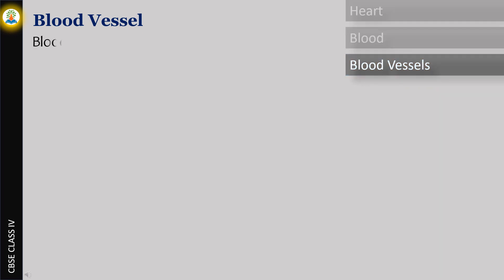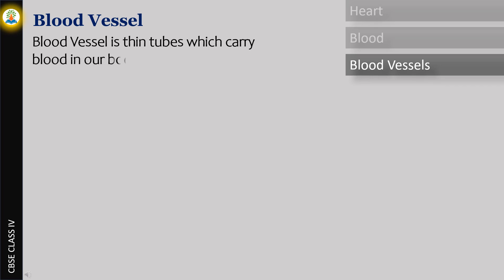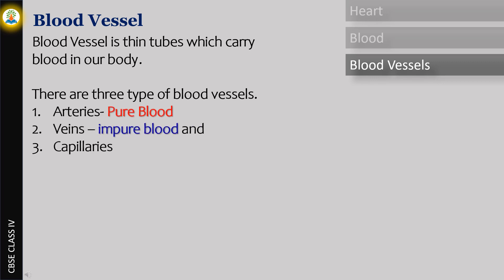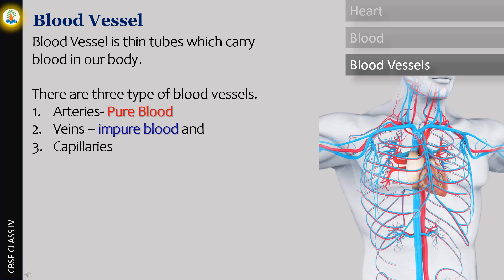A blood vessel is a thin tube which carries blood in our body. There are three types of blood vessels: arteries, which carry pure blood; veins, which carry impure blood; and capillaries, which are very small vessels.